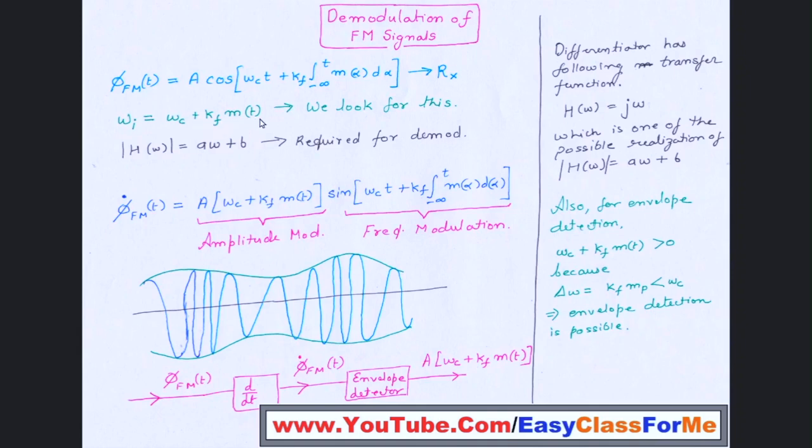It will have a maximum value, a minimum value depending upon the maximum minimum value of this m(t). So at every point this thing will be multiplied. Now there are various realizations of this type of filter.